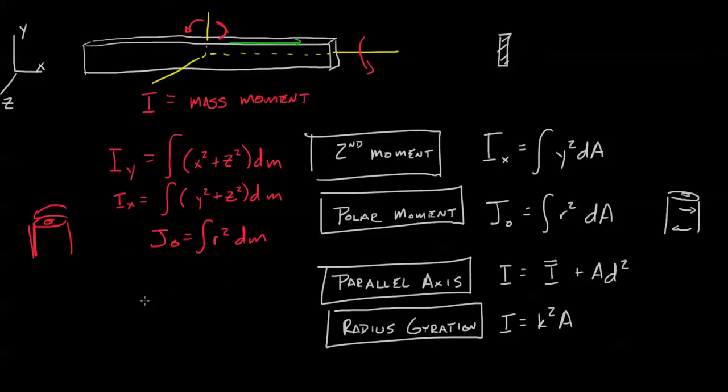Because these equations are so similar, we also have a parallel axis theorem, which looks frighteningly similar to the other one. Instead of area, we're not as concerned about area, we're concerned about mass now. So I is I bar plus md squared, and we have our radius of gyration. Also, these two really go hand in hand, parallel axis and radius of gyration, it's going to be k squared times m.